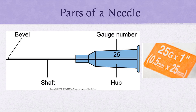Let's look at the different parts of needles — in lab we'll break out some needles and look at these up close. The hub is what screws into the luer lock of the syringe. The shaft of the needle connects right into the hub. The last part is the bevel, and you will hear people talking about turning the bevel up.